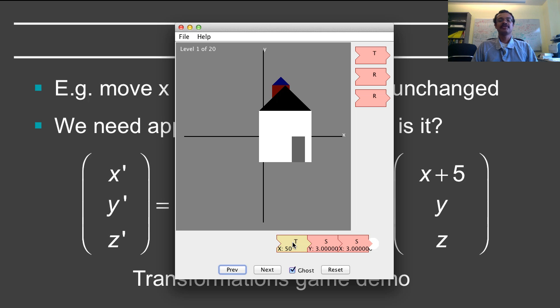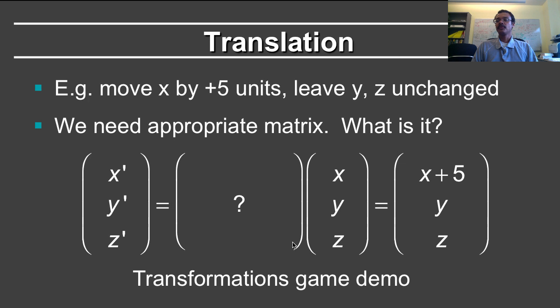How can I express this transformation using transformation matrices? For that, we come back here, and I've written down the equations. So we have x prime, y prime, z prime. There is some matrix we want to apply to x, y and z. And what we want to have is that the x coordinate, I mean the x position goes from x to x plus 5. The y position stays at y, and the z position stays at z. So what is the matrix for this?